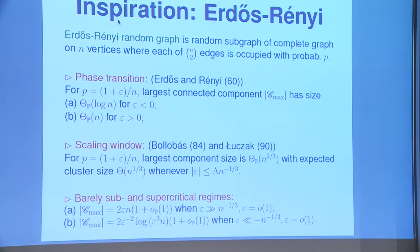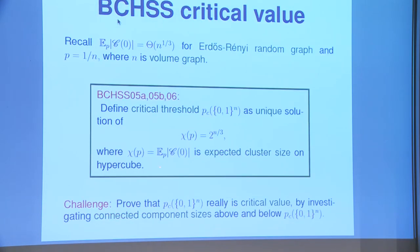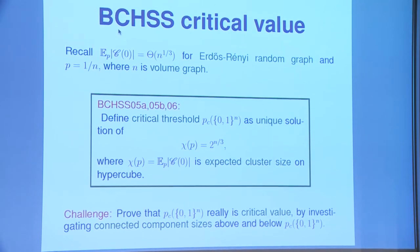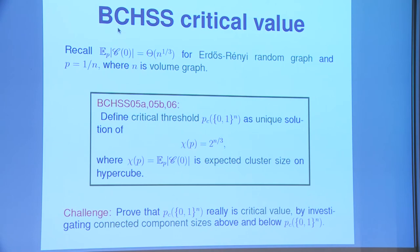The expected cluster size is a continuous function of p, growing from 0 at p = 0 to 2^n at p = 1. We define p_c as the point where the expected cluster size equals 2^{n/3}. This was done in a series of papers with Borgs, Chayes, myself, Gordon Slade, and Joel Spencer — sometimes called the BChS papers. The challenge is to prove this is actually the right definition.